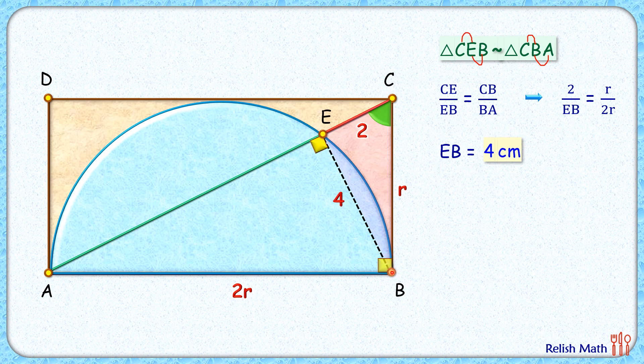And again, in this red triangle, if we apply the Pythagorean theorem, we'll get R² = 4² + 2², or R² = 20, and R = 2√5 centimeters. And that's our answer!